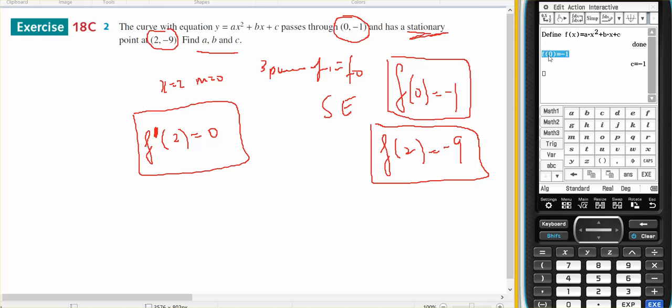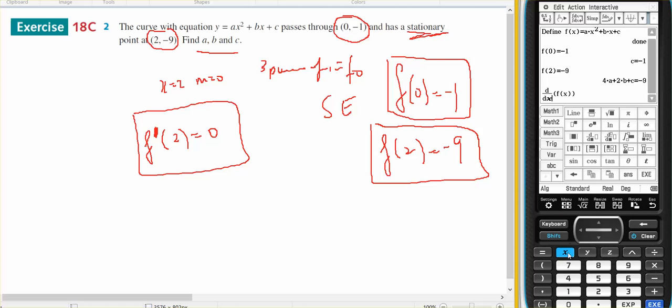I also know that f(2) equals -9, and that gives me equation number 2. If I take the derivative of this with respect to x, I get that expression. Then I need to make it equal to 0, given x equals 2. When I execute that gives me my third equation.